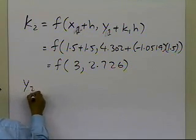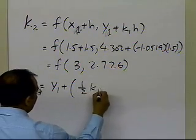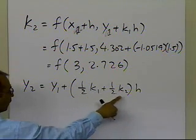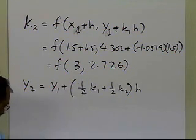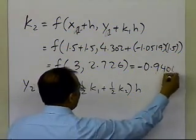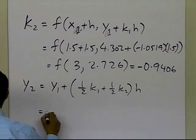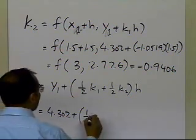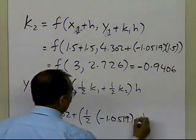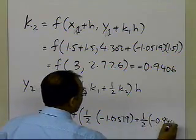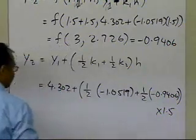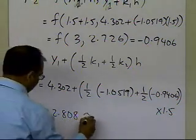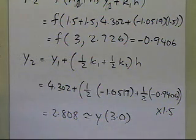From here, y-sub-2 equals y-sub-1 plus one-half k1 plus one-half k2, times h. k1 is an estimate of the slope at x equal to 1.5 and k2 is an estimate of the slope at x equal to 3. With y-sub-1 equal to 4.302, k1 equal to minus 1.0519, k2 equal to minus 0.9406, and h equal to 1.5, this turns out to be 2.808. That is the approximate value of y at x equal to 3.0.